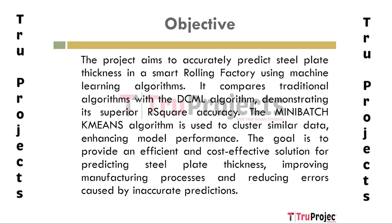The objective of the project is to predict the thickness of steel plates accurately in a smart rolling factory using machine learning algorithms. By evaluating and comparing traditional algorithms with the novel DCML algorithm, the project aims to demonstrate the superior performance of DCML in terms of R-squared. The project utilizes the mini-batch k-means clustering algorithm to cluster similar data, enhancing individual machine learning models by training them on data with familiar characteristics, providing an efficient and cost-effective solution for predicting steel plate thickness.